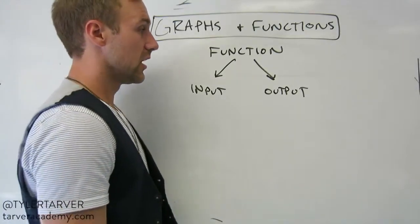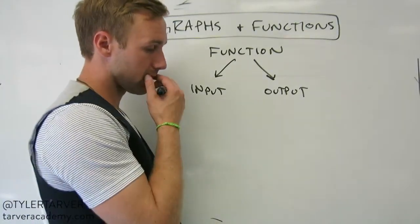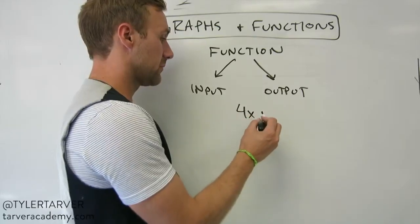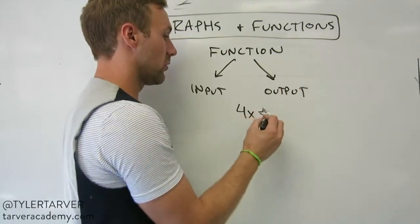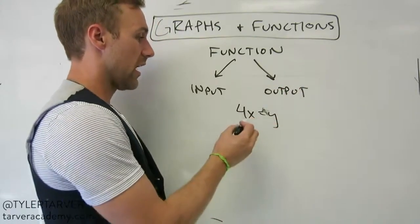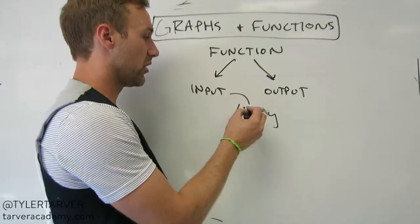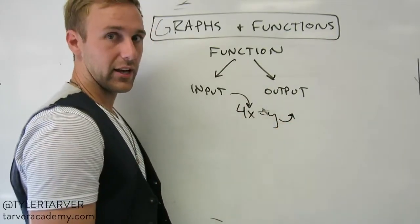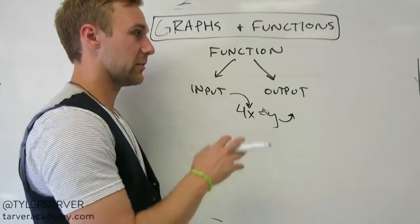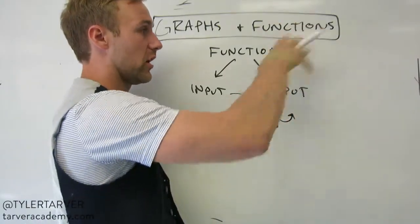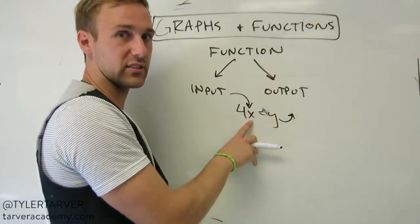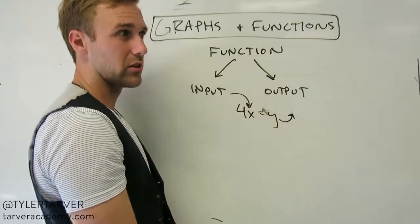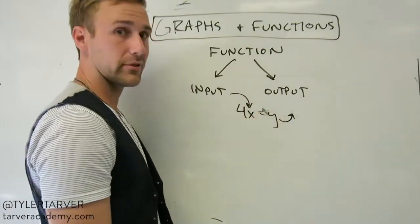For instance, let's say you got 4x equals y. X is your input — you're putting that number in — and y is your output, that's what you're getting out of it. It's a relationship, and it can move or go up or go down based on what your x is and then what your y turns out to be. So that's a short summary of input and output.